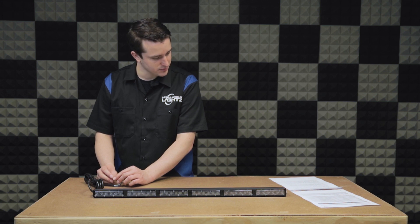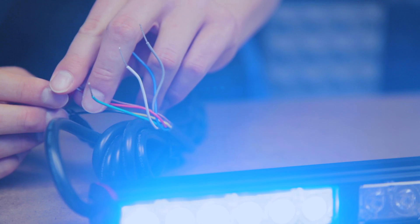The green wire is for mode 2, or if you have takedowns this will make the takedowns flash.